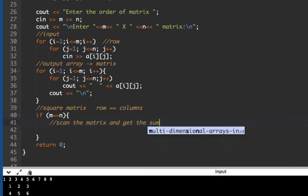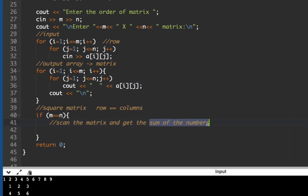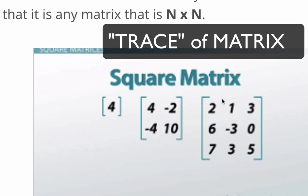Inside the if block, we scan the matrix to get the sum of diagonal numbers, which gives us the trace. For example, in a 2x2 matrix, elements at row 1 column 1 and row 2 column 2 are the diagonal — their sum is the trace. So rows and columns at the diagonal position satisfy i == j.